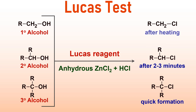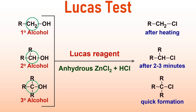Keep in mind that in primary alcohols, the alcoholic group is attached to the primary carbon, which in turn is linked to only one carbon. In secondary alcohols, the alcoholic group is attached to a secondary carbon, which is connected to 2 carbon atoms only. And in the case of tertiary alcohols, there is a tertiary carbon that is connected to 3 other carbons.